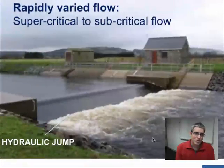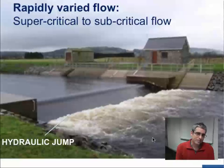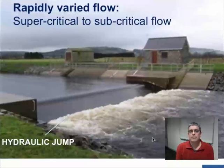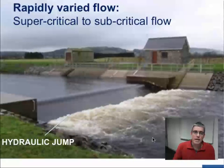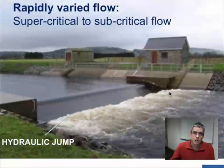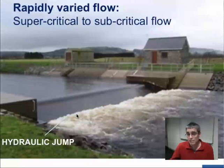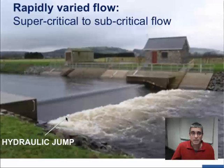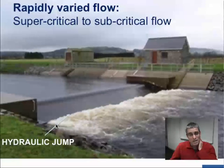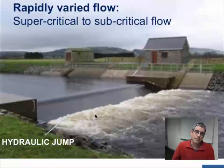Another situation where we get rapidly varied flow is at a hydraulic jump. We can see a hydraulic jump forming here downstream of this weir. We have supercritical flow on the downstream face of the weir, and that transitions to subcritical flow at the hydraulic jump, which is a highly turbulent region where the flow depth actually increases. It's one of the few situations where rivers flow uphill without any artificial means to propel it. We'll talk more about hydraulic jumps later in topic two.